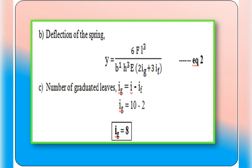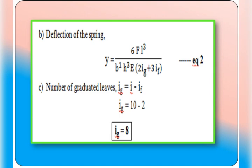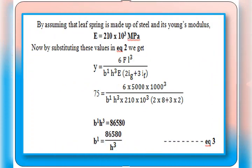For equation two, we need the value of Young's modulus E, which was not given in the problem. We assume the leaf spring is made of steel, so Young's modulus E = 210 × 10³ mega Pascal.